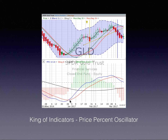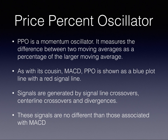We see signals that are generated when we have signal line crossovers — when the blue line crosses over the red going up, or it crosses over the red going down. These signals are no different from those associated with the MACD. So if you're familiar with the MACD, you'll be very comfortable in using the price percent oscillator.